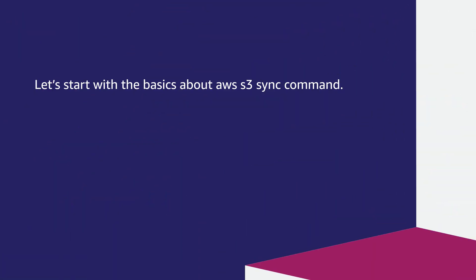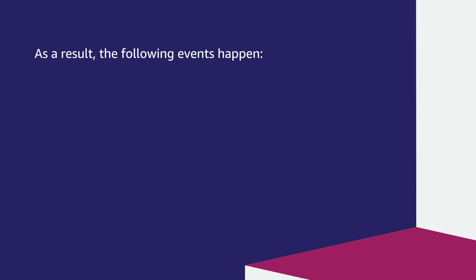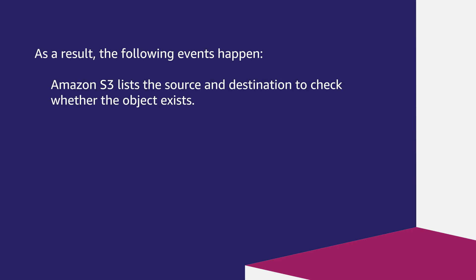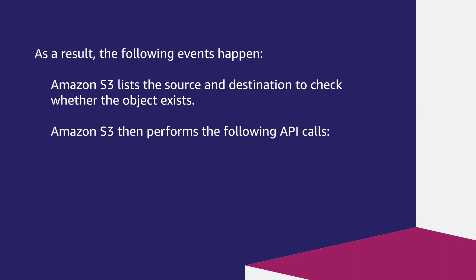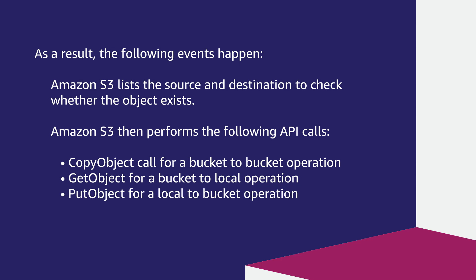Let's start with the basics about the AWS S3 sync command. When you run the AWS S3 sync command, Amazon S3 issues the following API calls: list objects v2, copy object, get object, and put object. Amazon S3 lists the source and destination to check whether the object exists, then performs copy object for a bucket-to-bucket operation, get object for a bucket-to-local operation, and put object for a local-to-bucket operation.